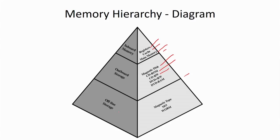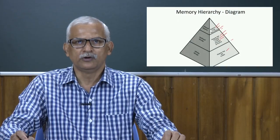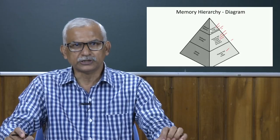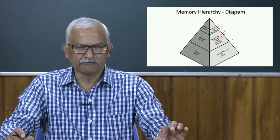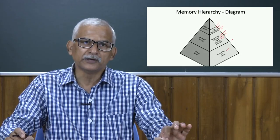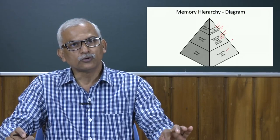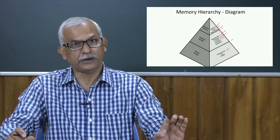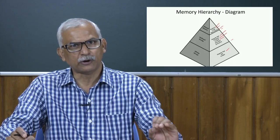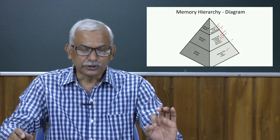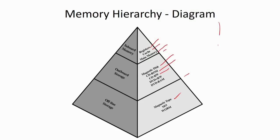One more category is offline storage, which is basically used for backup purposes. One type is magnetic tape, and there are different varieties such as WORM — write once, read many. These are called offline because the processor cannot directly access data from those devices; somehow we have to bring the data to some online device first, and from the online device the processor accesses the data. This is the total memory hierarchy in our computer system.